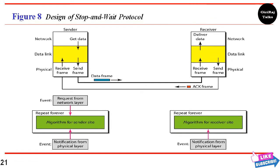In the stop-and-wait protocol, if data frames arrive at the receiver faster than they can be processed, frames must be stored. Normally the receiver does not have enough storage, especially if receiving from many sources, which may result in discarding frames or denial of service. To prevent the receiver from being overwhelmed, we need feedback from the receiver to tell the sender to slow down. The stop-and-wait protocol works because the sender sends one frame, stops until it receives confirmation (ACK) from the receiver, and then sends the next frame.